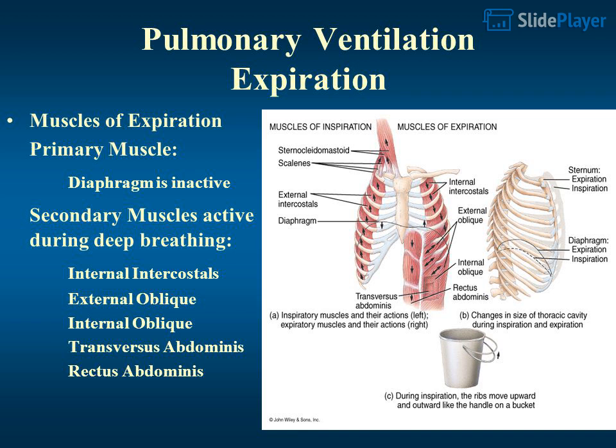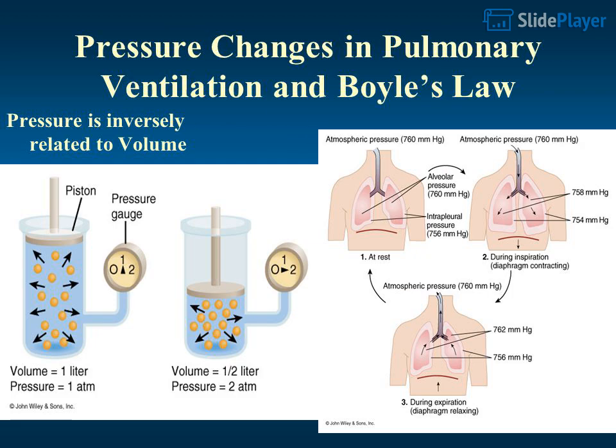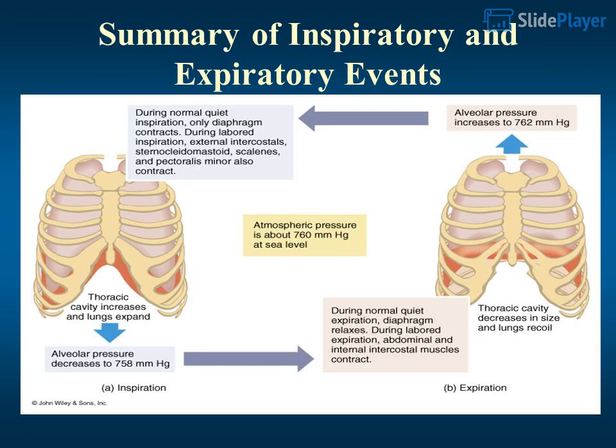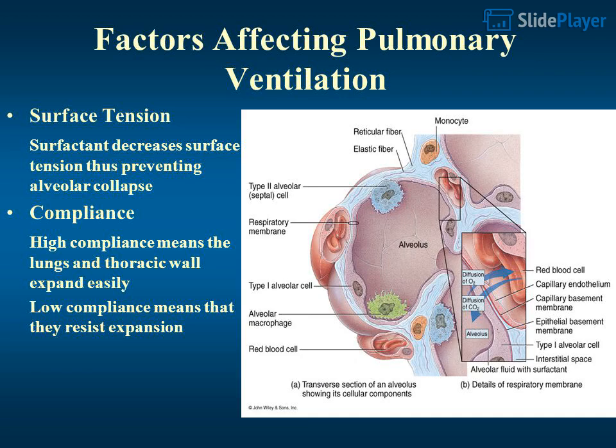Secondary expiration muscles active during deep breathing include the internal intercostals, external oblique, internal oblique, transversus abdominis, and rectus abdominis. Pressure changes in pulmonary ventilation are governed by Boyle's law: pressure is inversely related to volume. This summarizes the inspiratory and expiratory events.